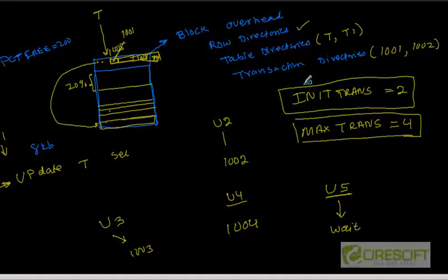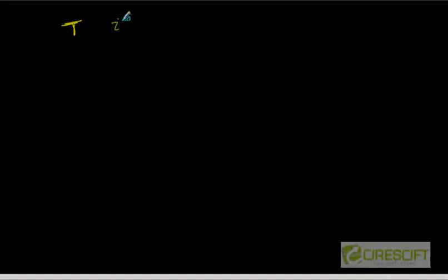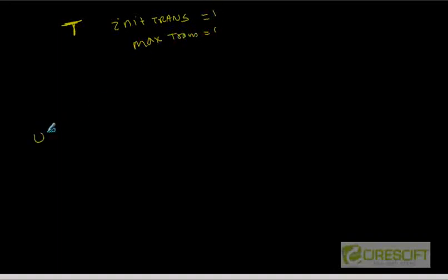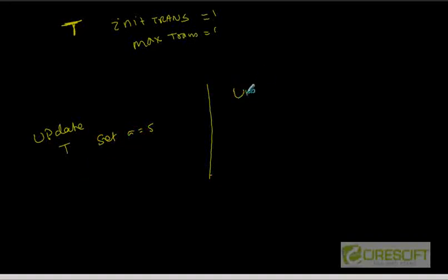Let's take an example that will make things clear. If you create a table T with storage parameters INIT_TRANS and MAX_TRANS both set to 1, then in one session you go and do an update on table T setting a = 5. While this update is running, don't commit. Then try to update table T setting a = 6 — another row. You will notice that this second update is going to wait.